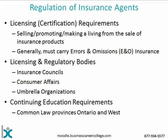Insurance agents are regulated based on what activities they perform. Technically, in most provinces you're obtaining a certificate to act as an insurance agent — it doesn't matter if you're in a captive agency, MGA system, or some hybrid. The trigger activities are: selling, promoting, making a living from the sale of, or giving advice around insurance products. These generally require licensing. Basically, if you get paid as a result of somebody having new insurance in force or supporting existing insurance, you likely require a life insurance license.